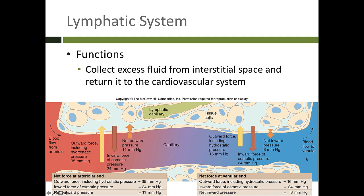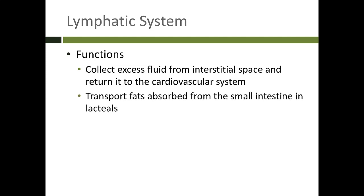On the other end, the venous side shown on the right-hand side of your screen, the pressure is much lower pushing fluids out of the capillary, but the inward force is the same. The colloid osmotic pressure is going to help suck fluid back into the capillary, and this blood will then return back to the heart. Not all of the fluid that leaves on the arterial side comes back in on the venous side. That extra fluid needs to be returned to the cardiovascular system, and it is in fact picked up by something called a lymphatic capillary, which brings that fluid back to the cardiovascular system.